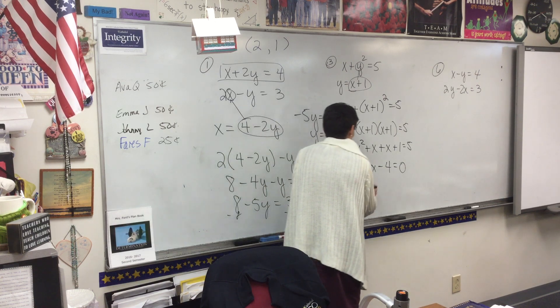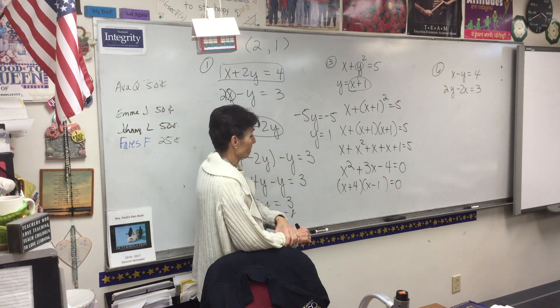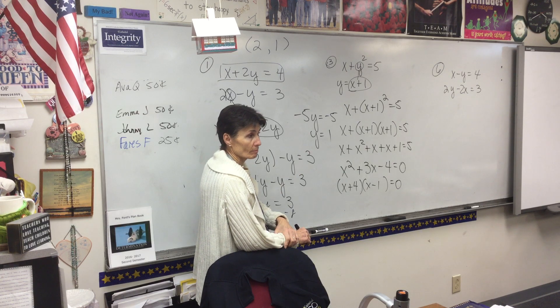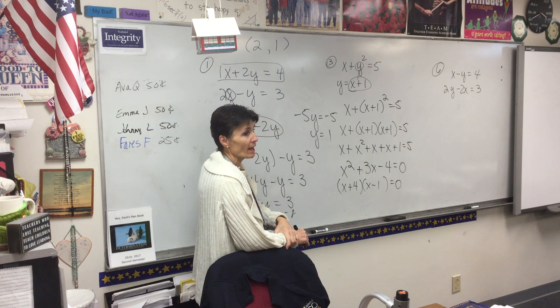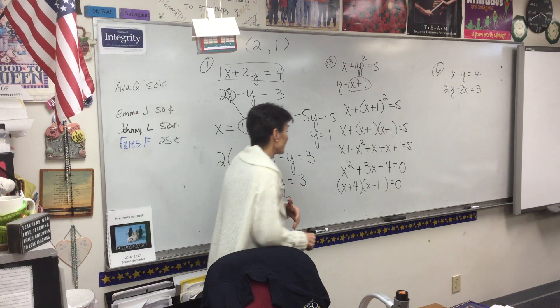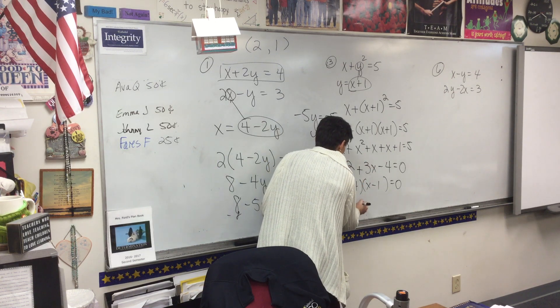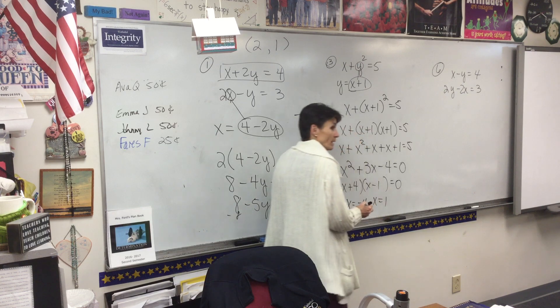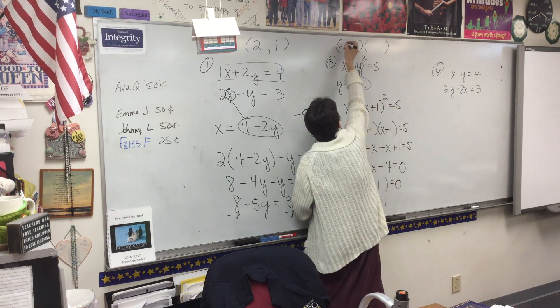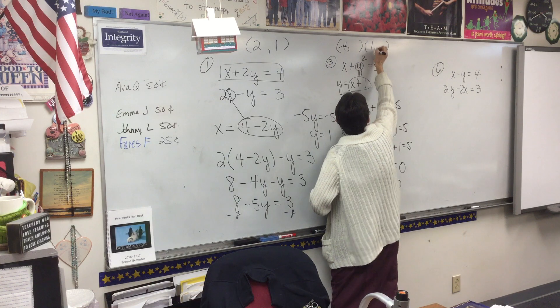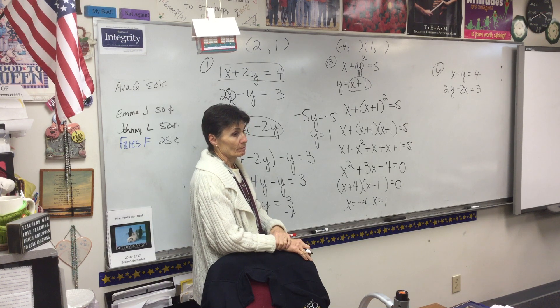x plus 4 times x minus 1. Actually, we can have negatives here. We can't have negatives when we have, like, if it's perimeter or something like that. But we're just looking for where they cross. They can cross at negative places. So I'm going to get two answers here. x is negative 4 or x is 1. So I have two ordered pairs as my answer. One is negative 4 comma something, and one is 1 comma something.